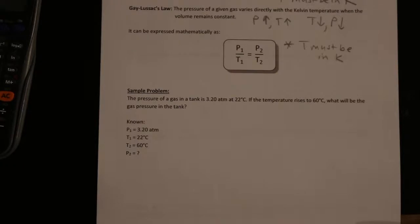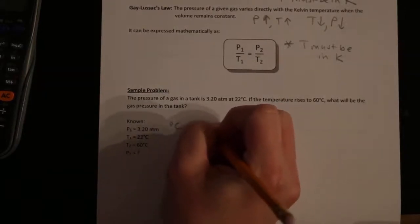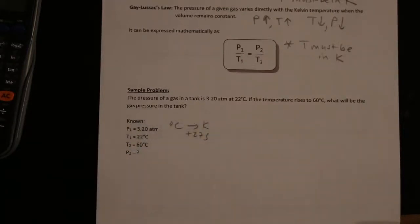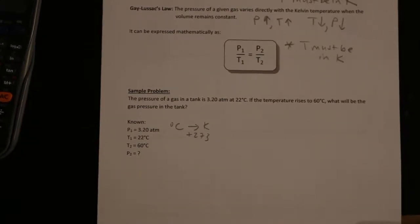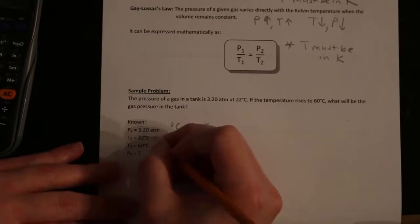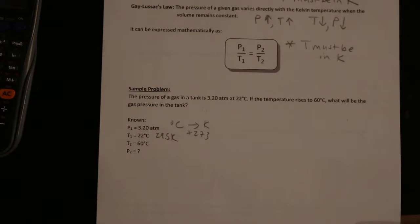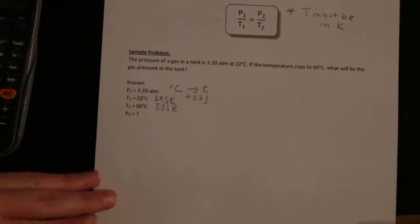Remember, temperature must be in Kelvin, so we need to convert both of these temperatures to Kelvin. To go from degrees Celsius to Kelvin, you add 273. So T1 is going to be 22 plus 273, which is 295 Kelvin. And T2 is going to be 60 plus 273, which is 333.